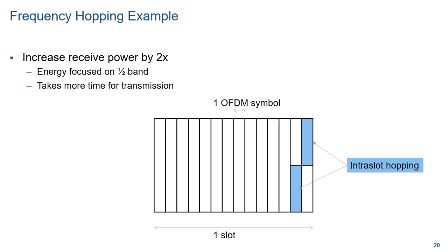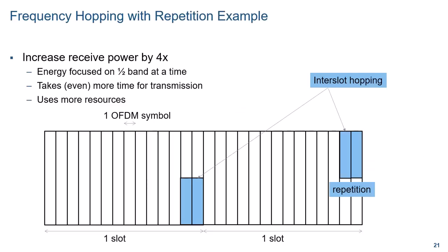Here is an example of frequency hopping. The bandwidth is divided into two, and the UE transmits with full power over half the bandwidth in two different OFDM symbols. This example combines frequency hopping and repetition, where the received power is increased by 4x because each transmission can be twice as high and it is repeated twice. This hopping and repetition can take place in different slots, leading to inter-slot frequency hopping. While frequency hopping and repetition help compensate for limited transmit power, the downside is that it takes longer for the base station to acquire a view of the complete channel.